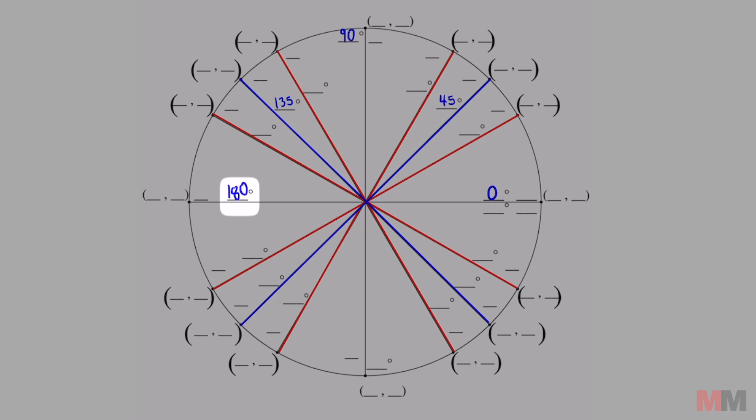180. Add another 45. 225. 270 on the y-axis at the bottom right there. Add another 45. 315. 360 degrees.